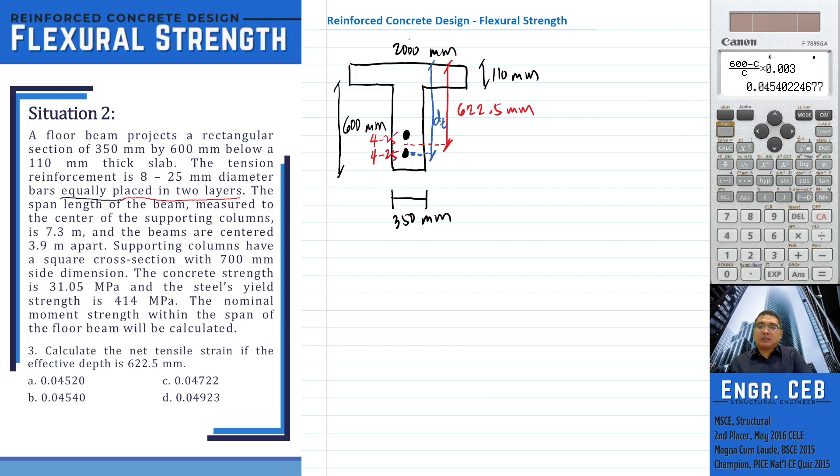And take note that our formula for the net tensile strain, epsilon T, that is simply 0.003. So if we have only one layer, we usually denote the T as the effective depth D.